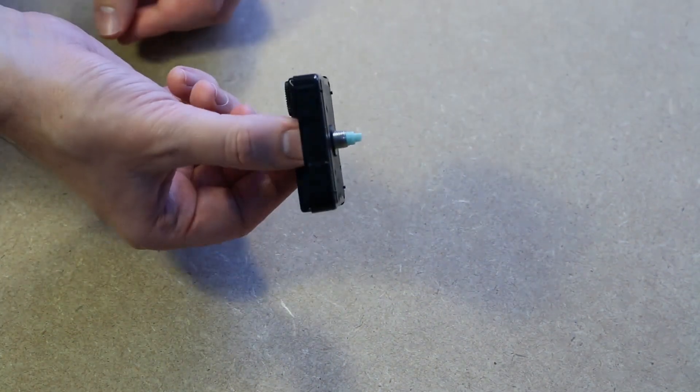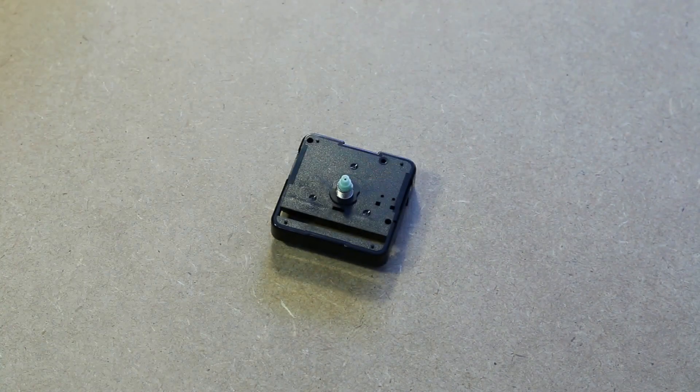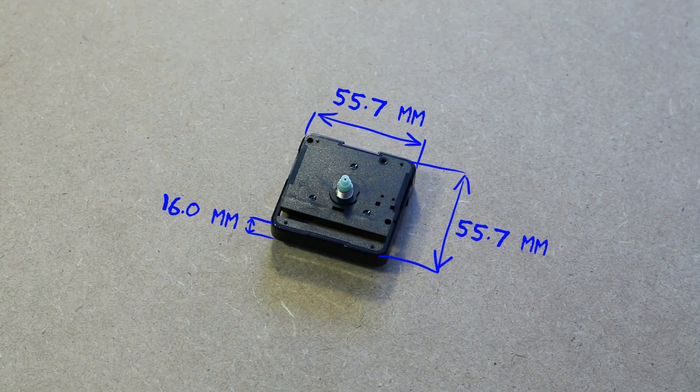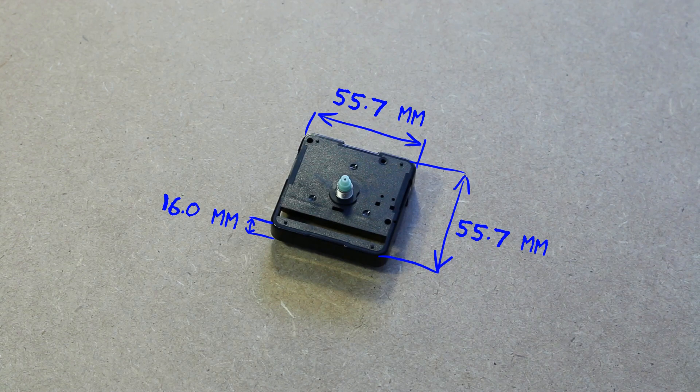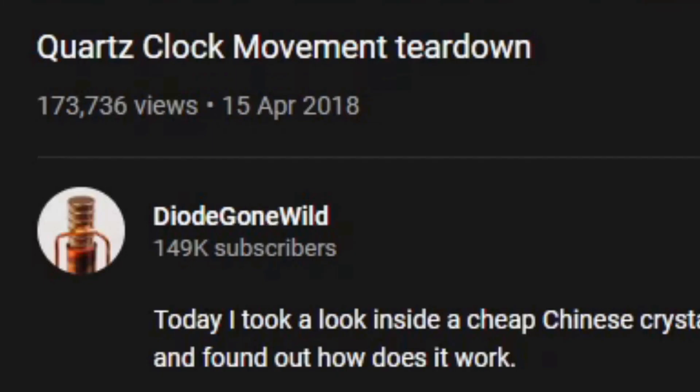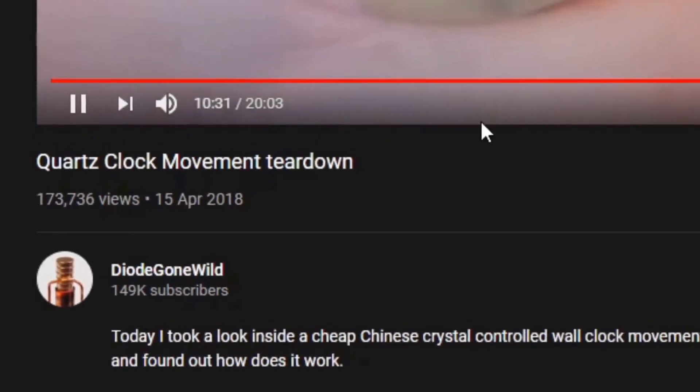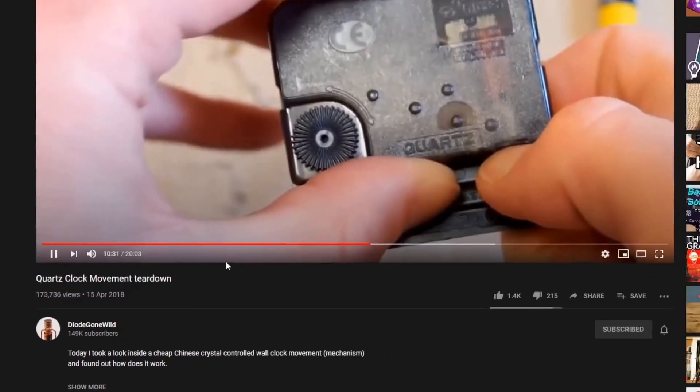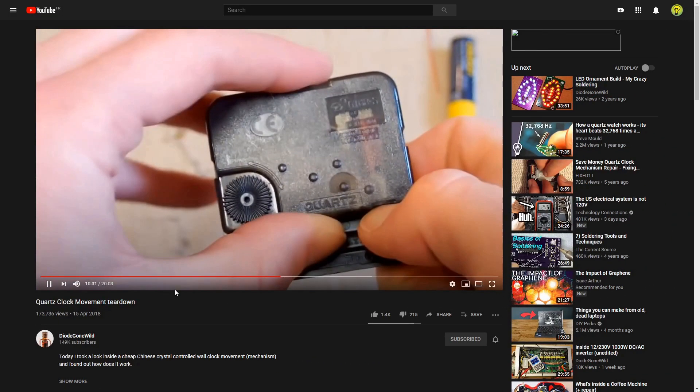Now you don't really need to know what's inside the black box to use it, but if you're really curious, and purely for the Wikipedia fun of it, DiodeGoneWild, another YouTube channel, made a really instructive video in which he is going all dexter on one of these clock movements.